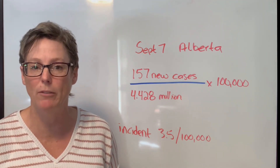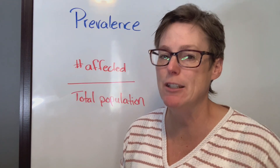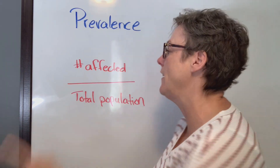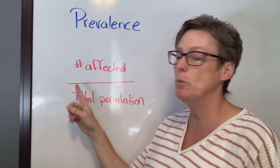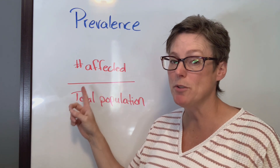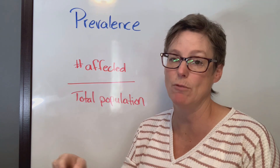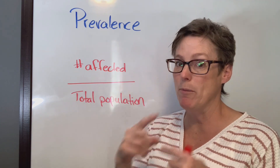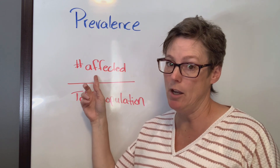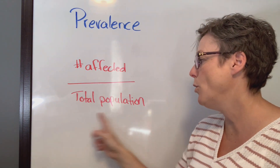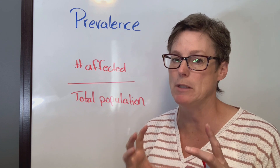Now let's look at prevalence. Prevalence is different in that it looks at the number of affected people — so this includes new cases but also cases diagnosed yesterday or 10 days ago where the person hasn't recovered. This number will be higher, and it is calculated over the total population, not just that defined subset.